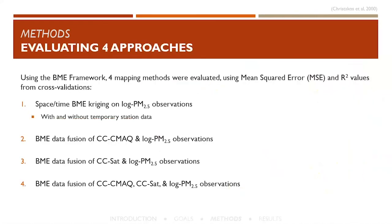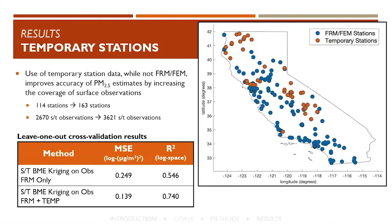Using these outputs, we compared four different mapping methods: space-time BME kriging on PM2.5 observations only (no satellite or model data); BME fusion of model and observations; BME fusion of satellite and observations; and BME fusion of all three. We also examined the added value of temporary stations — including those orange dots gives much higher coverage in unmonitored areas, resulting in more accurate estimates with lower mean squared error and higher R-squared. This is partly due to more stations and more space-time observations, and also gives a nice refinement in smoke plume shape in Northern California.